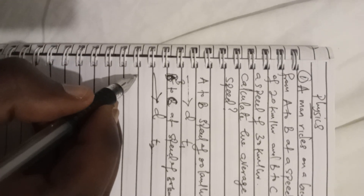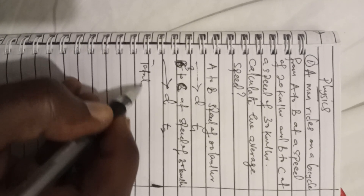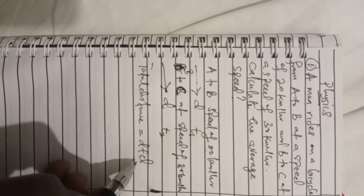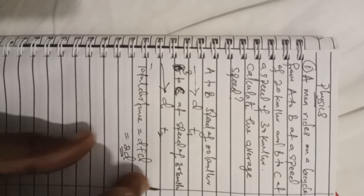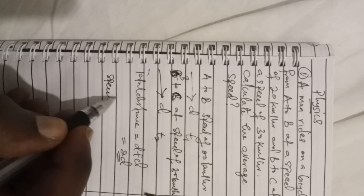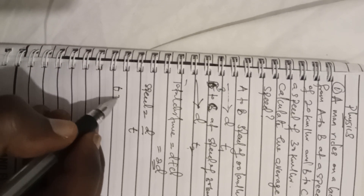Since they cover the same distance d, the total distance for the whole journey will be d plus d, which is 2d. Let's keep that. Now, because the times are different, we use the formula: speed equals distance over time, therefore time equals distance over speed.